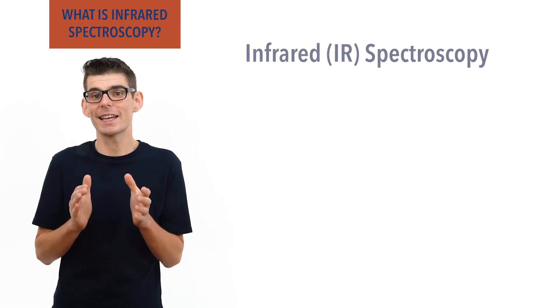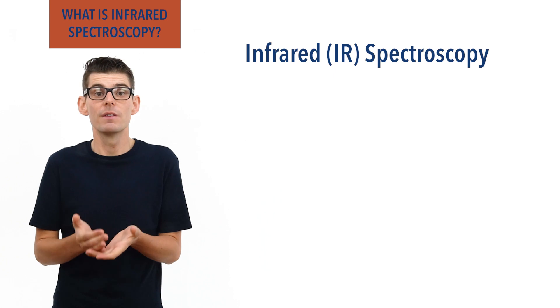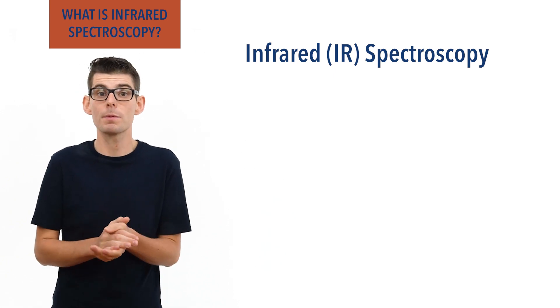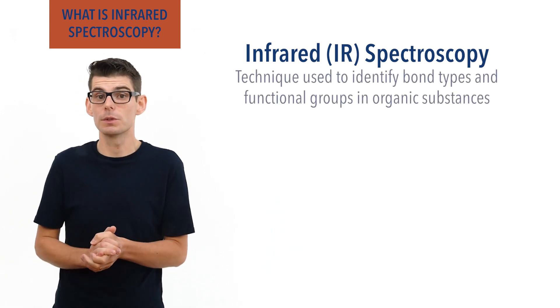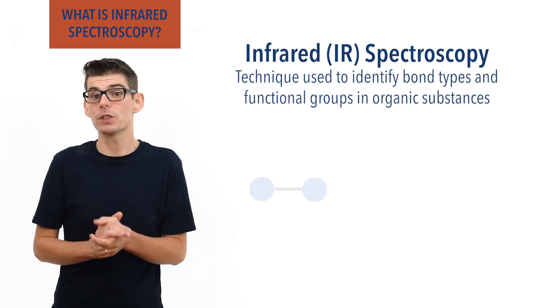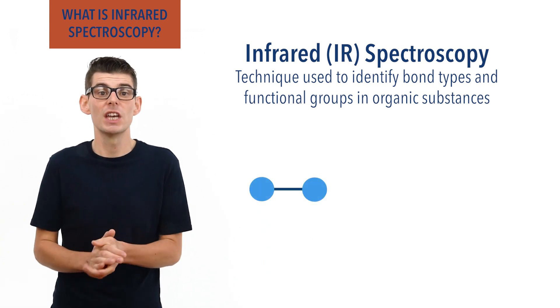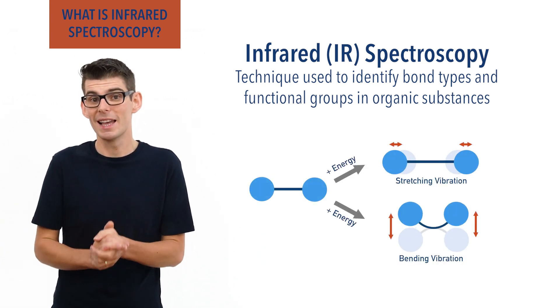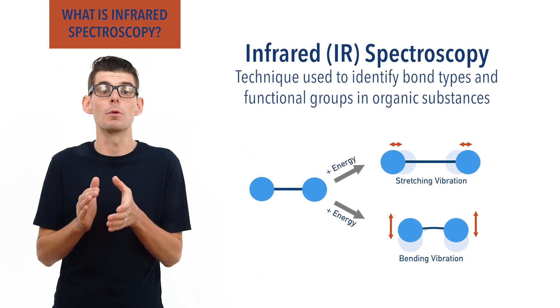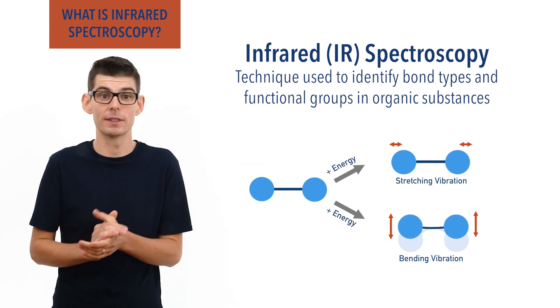Infrared spectroscopy is a technique used to analyze the bond types and functional groups present in organic molecules. Covalent bonds can absorb specific amounts of energy to vibrate in certain ways, and different bond types absorb different amounts of energy to do this.